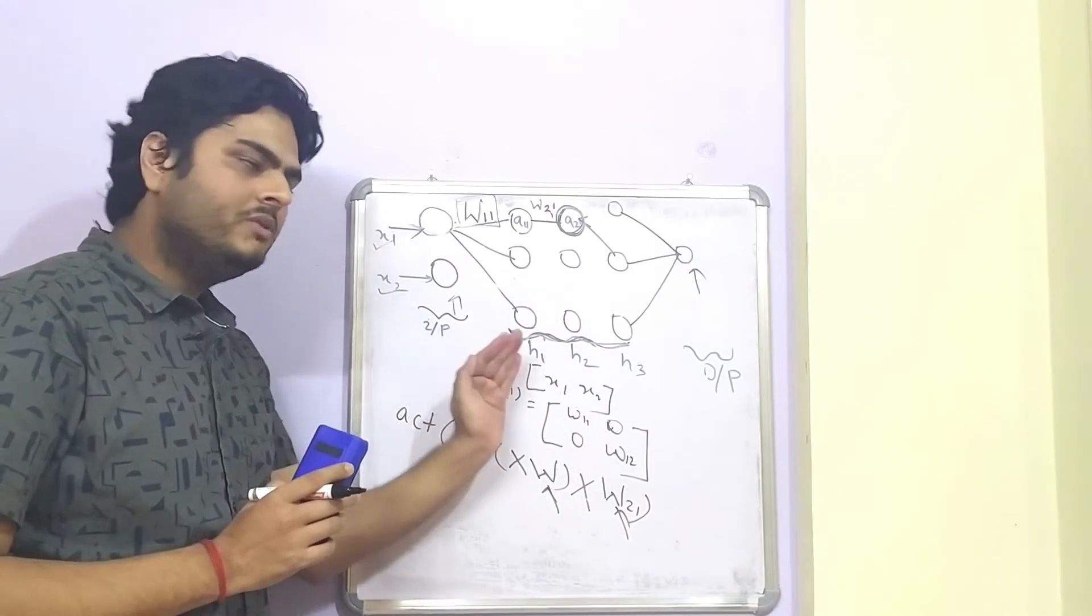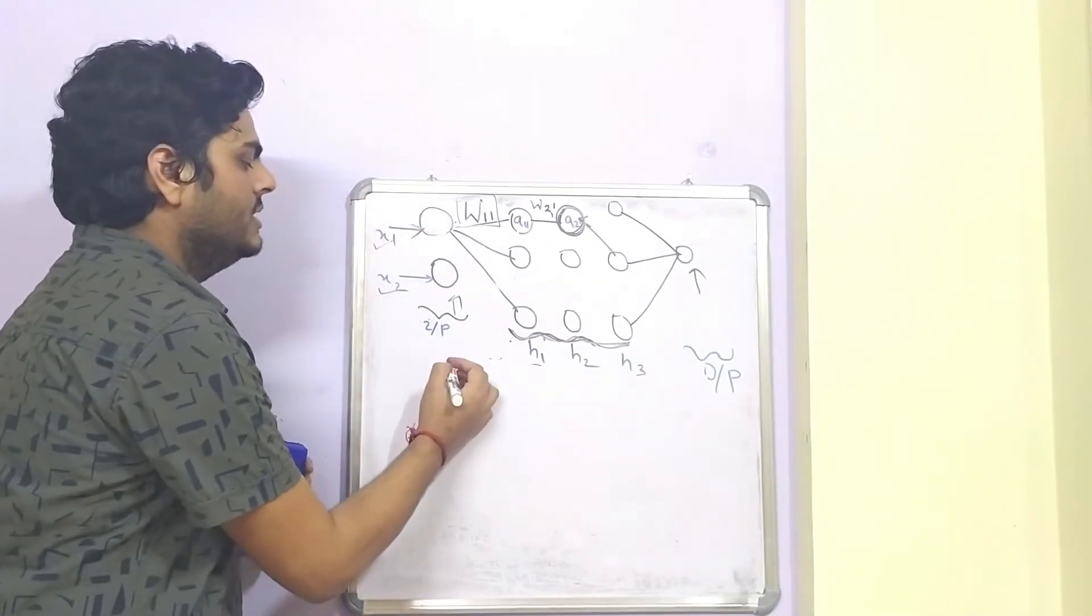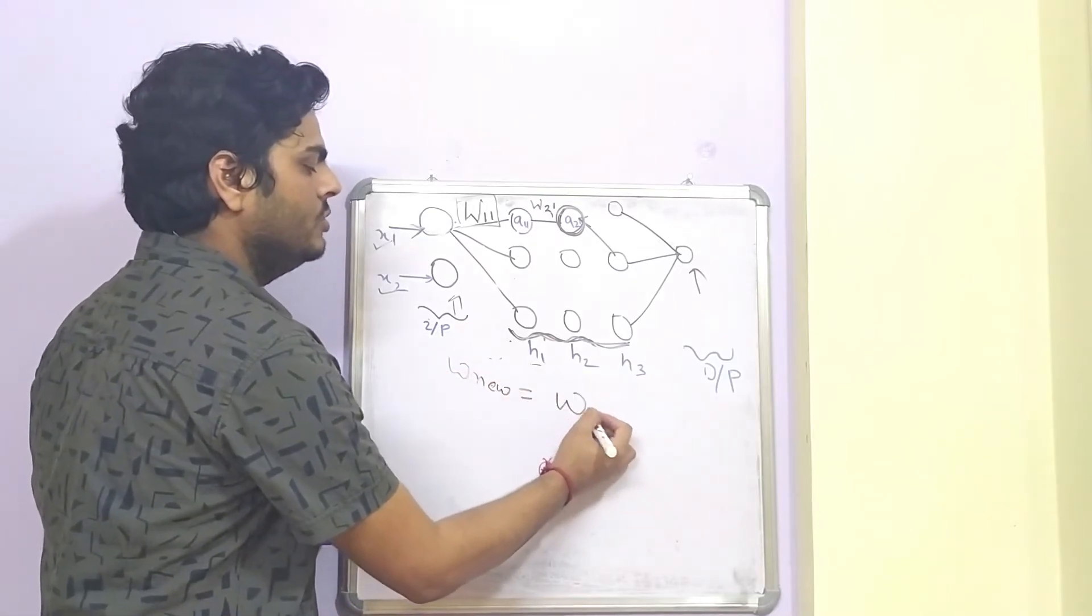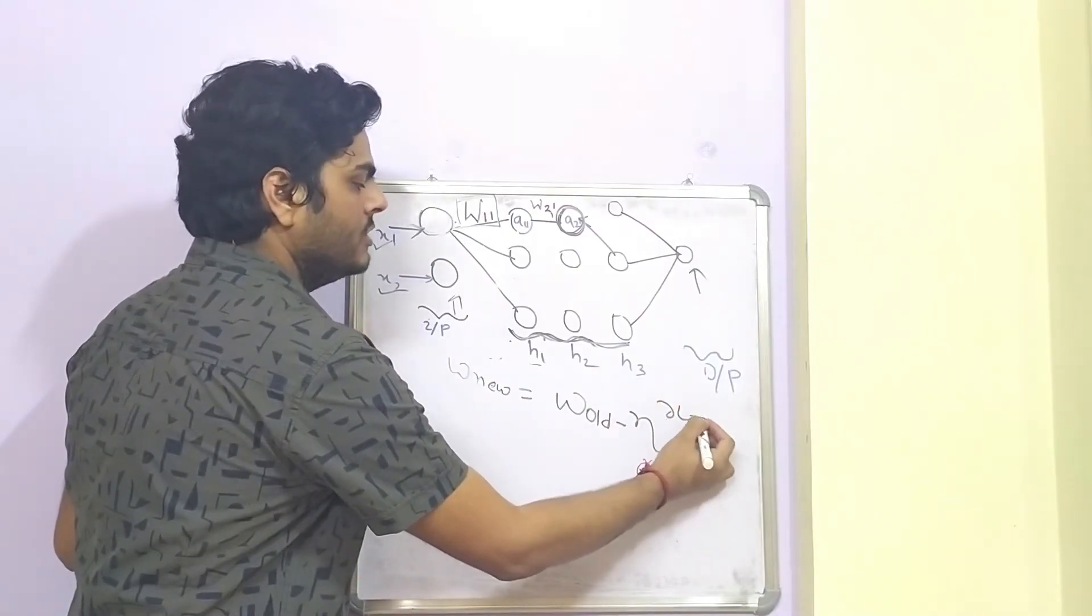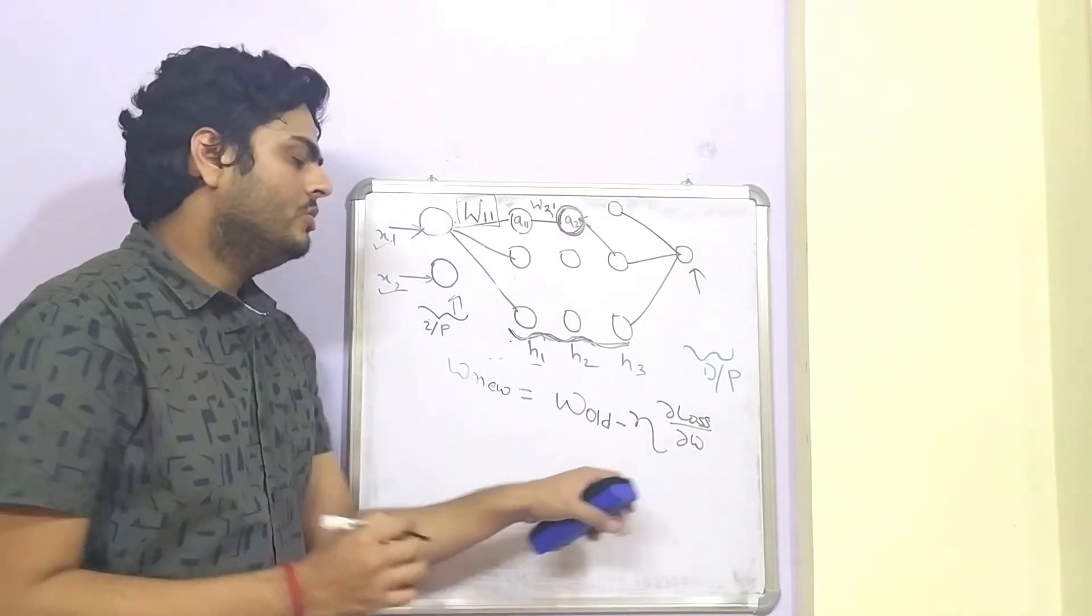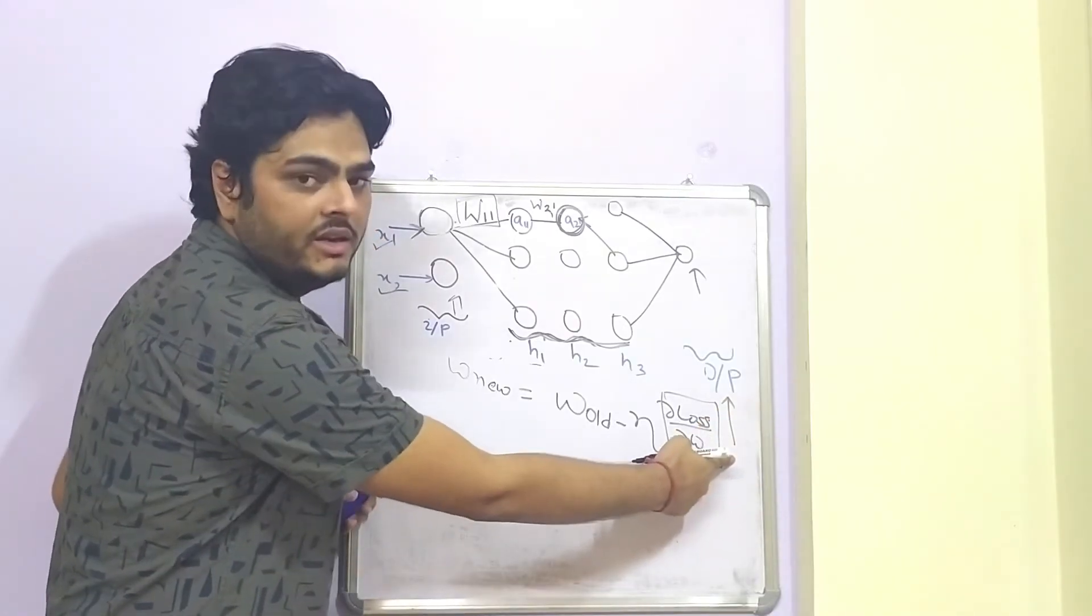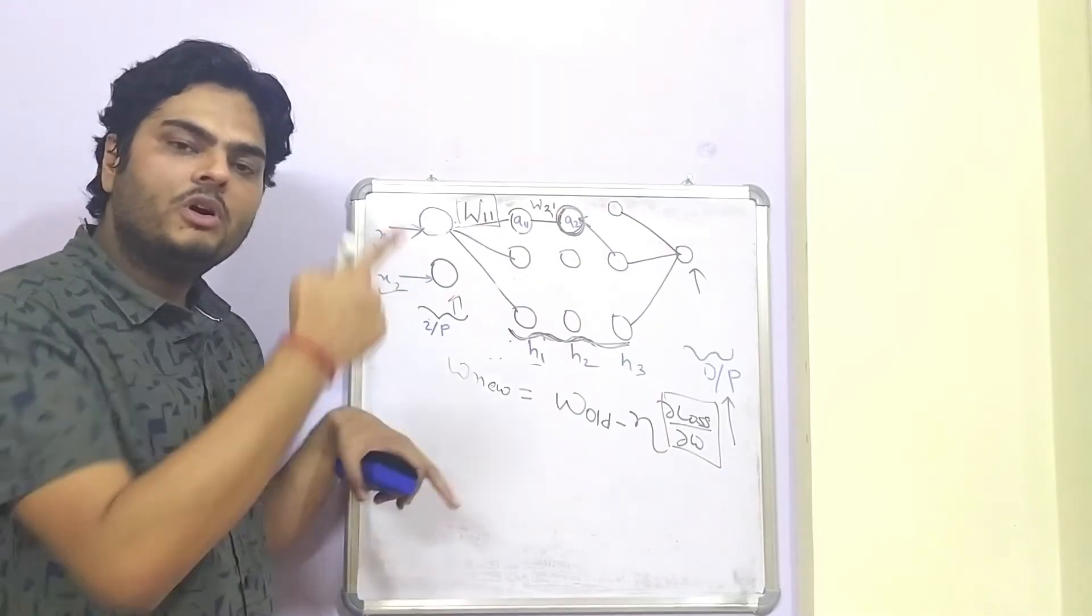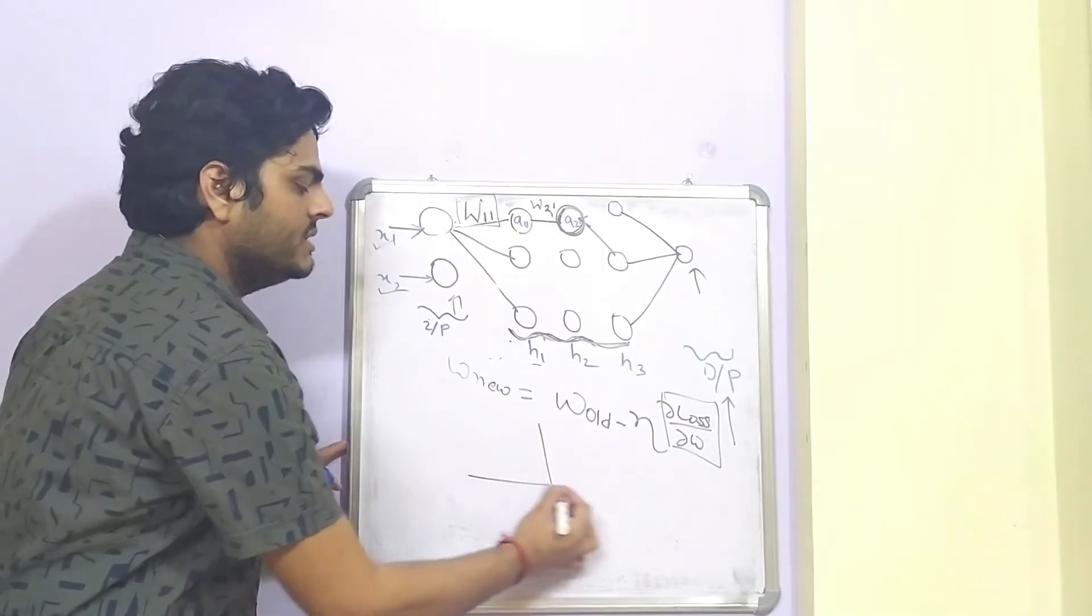And what will happen when we try to optimize this, the bigger number will go as input. So, w new is equal to w old minus eta of your derivative loss by w. Now, when this term is too high, which is the problem of exploding gradient, what will happen is this w new will keep oscillating between minimum values. So, it will never come to minimum value.